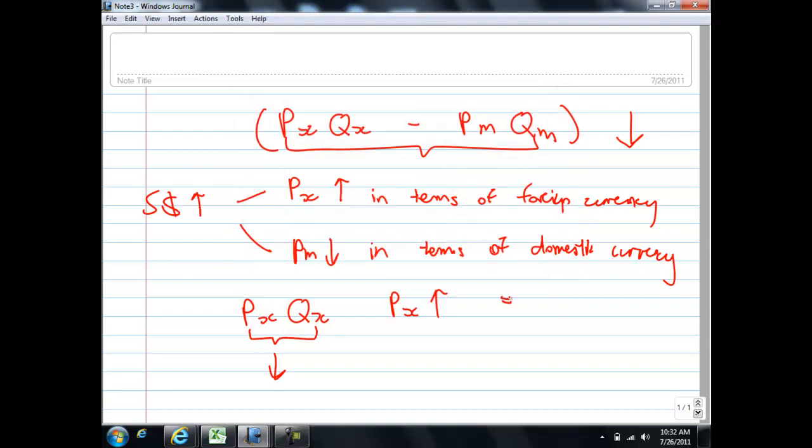So you need the PED to be more than one. What about the Pm times Qm? When Pm falls, if we want this whole thing, this net exports to fall, we need PmQm to rise. So under what condition will this fall in the price of imports lead to a rise in the so-called import expenditure?